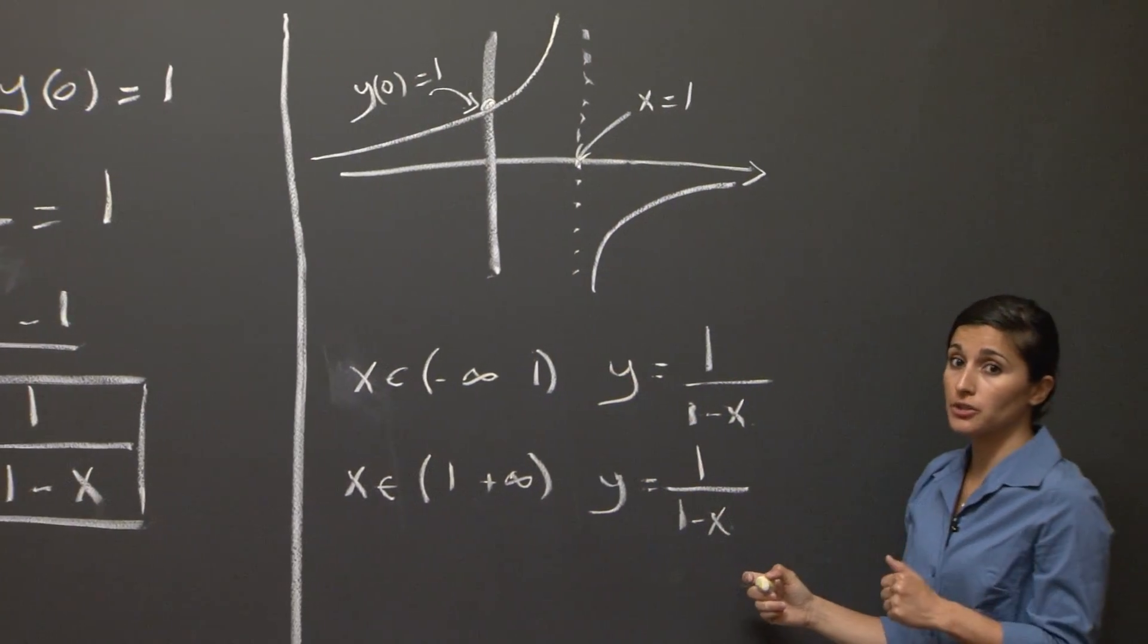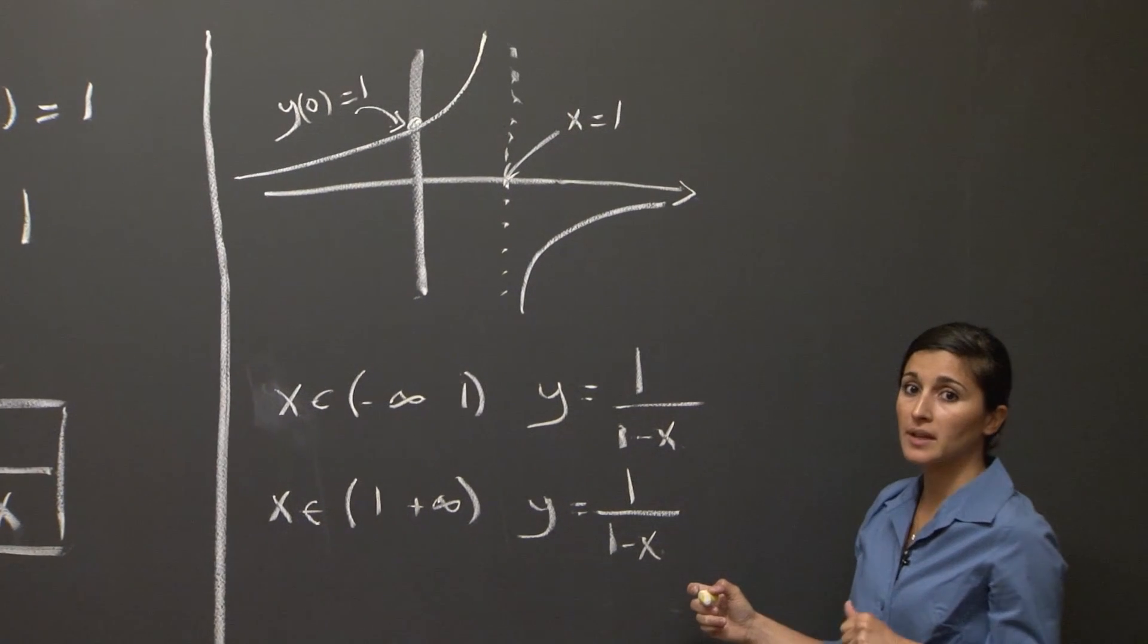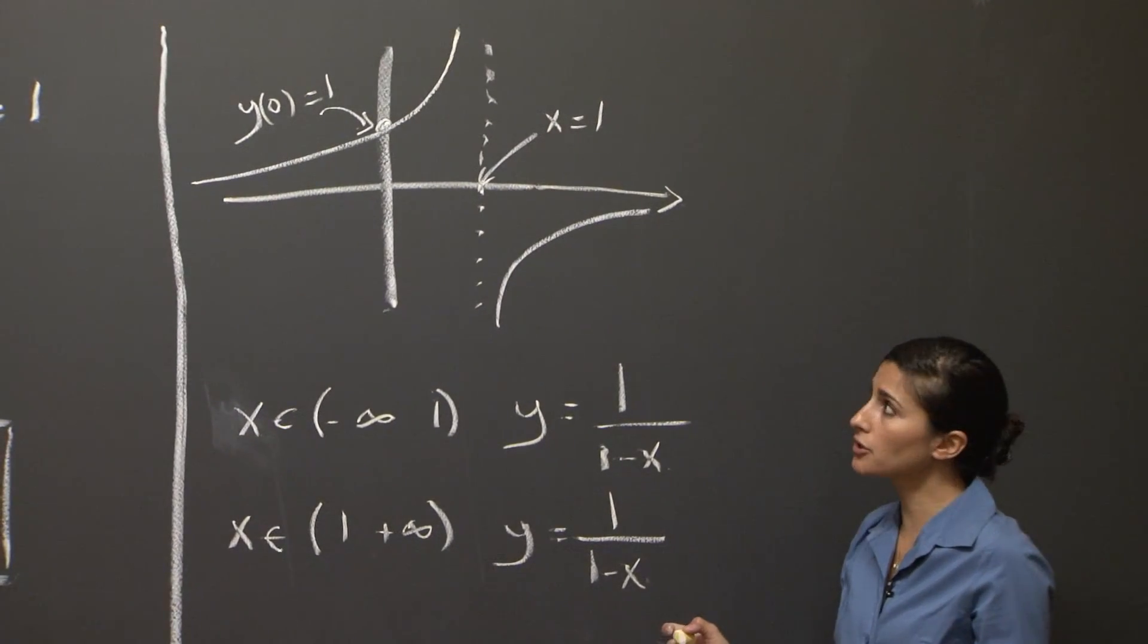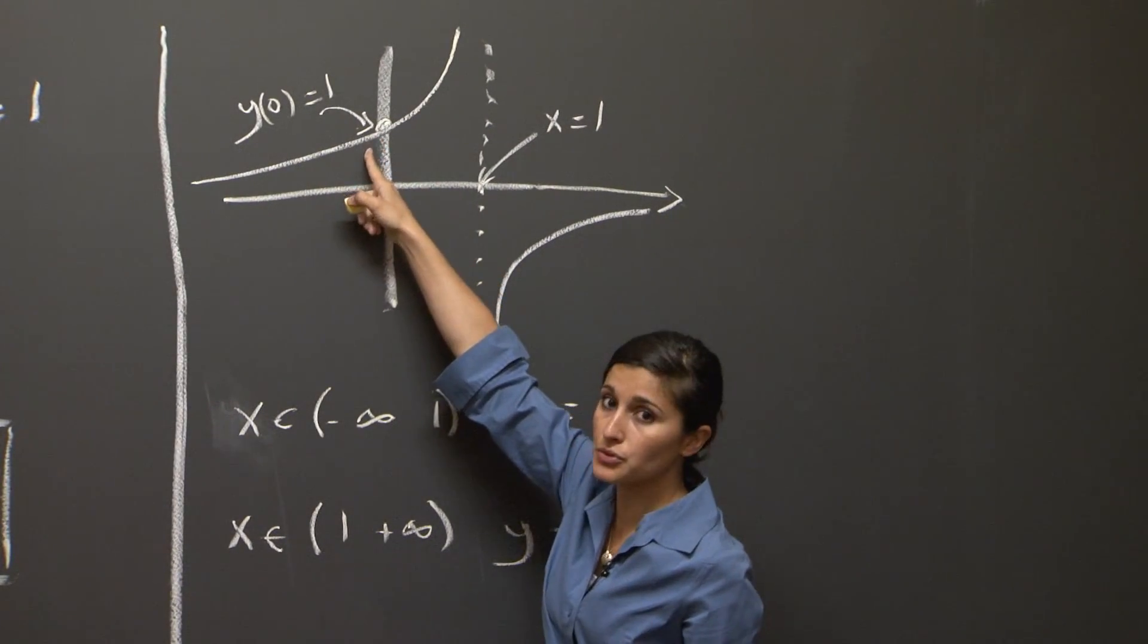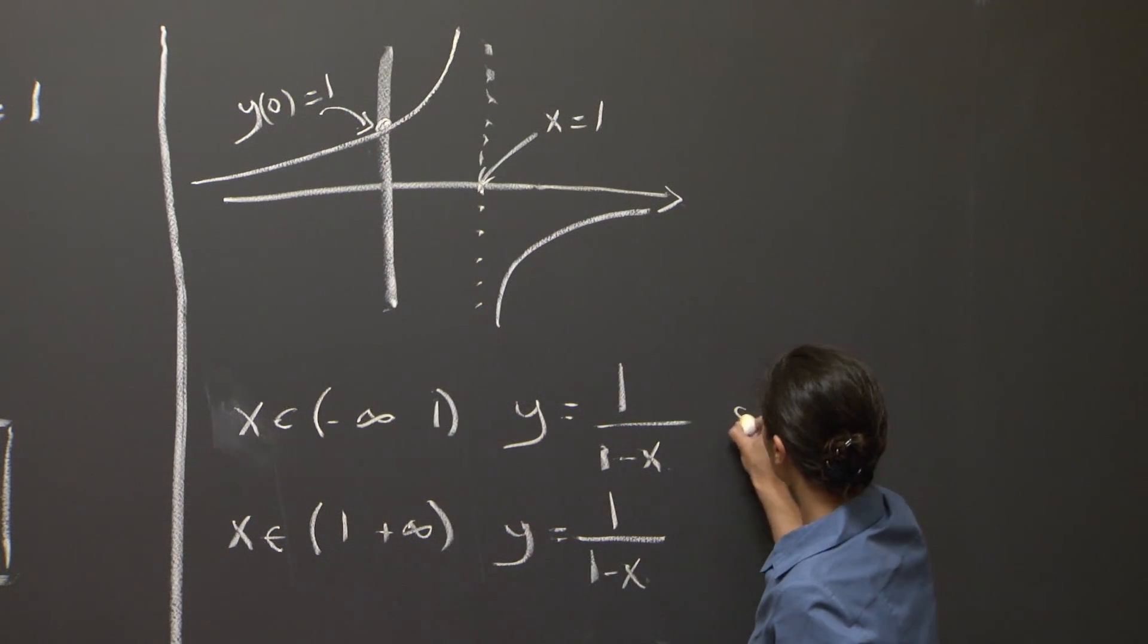The solution to our initial value problem needs to be the solution that passes through the imposed initial condition, which was y(0) equals 1.